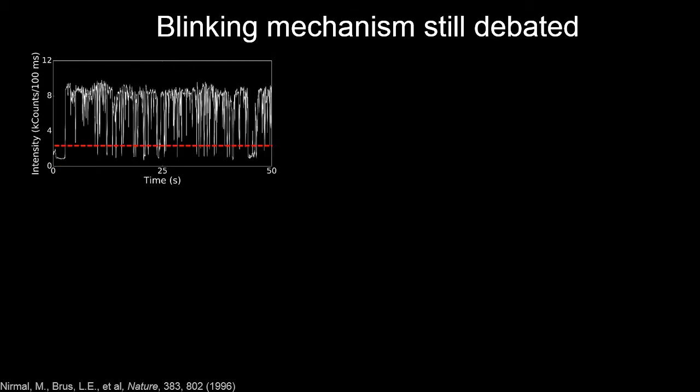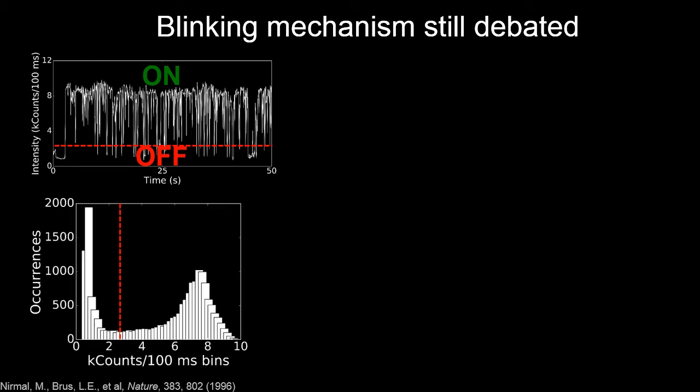If we zoom in on this red box I've outlined here, we can see that it continues in a self-similar fashion over many timescales. The way we analyze this data is to threshold the intensity traces as indicated with this red dashed line. We assign any signal above the threshold to the on state and below to the off state. We can also histogram the fluorescence intensity and we get this bimodal distribution showing we're switching between these two states.